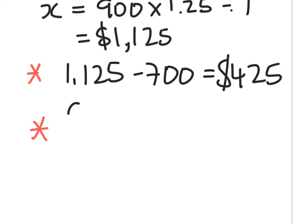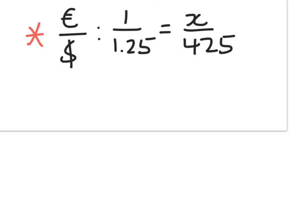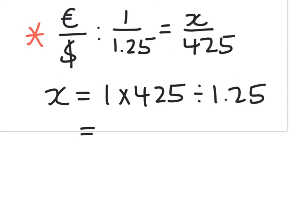So, again, I'm going to use my euros over dollars proportion. So, I know that 1 euro is $1.25. So, I want to know how many euros will I get for $425. So, I go at it with my proportion. X is equal to 1 times 425 divided by 1.25. And I'm going to plug that in the calculator. You could use a calculator maybe if you need to. 1 times 425 equals that divided by 1.25. 340. So, at the end of the trip, I had 340 euros.